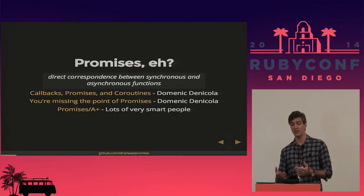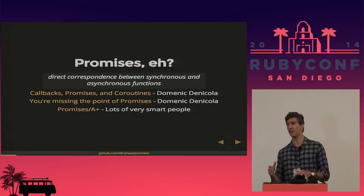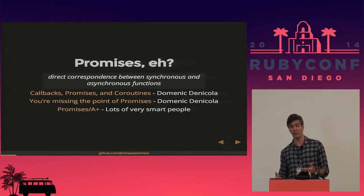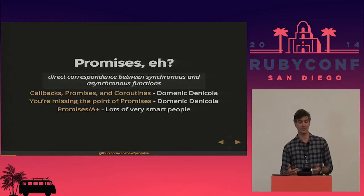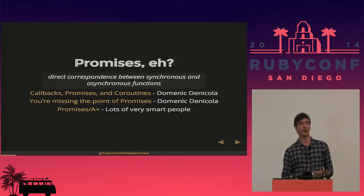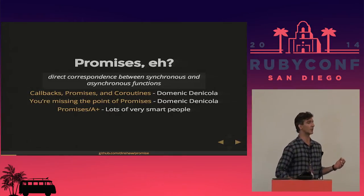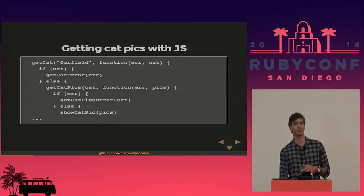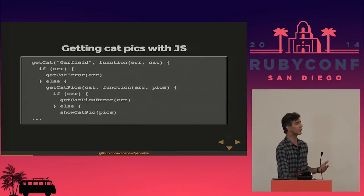"You're Missing the Point of Promises" is a blog post Denicola wrote because early on, when languages were starting to adopt the promise pattern, there were some disparate implementations — people were taking part of the spec and implementing that. He does a great job clarifying the truly core concepts. A lot of that work and community contributions culminated in the Promises A+ specification, with contributors you'll likely recognize from both the Ruby and JavaScript communities.